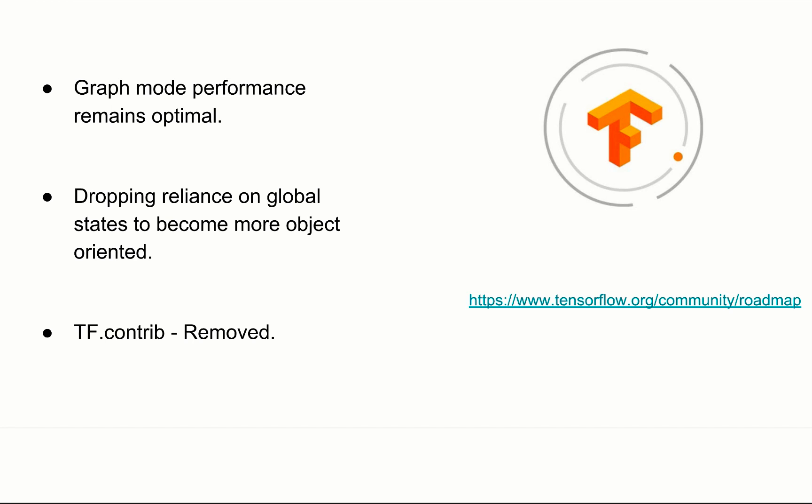With the updates as well, for graph mode, we are going to see eager execution become the default, but graph mode performance remains optimal for deep learning. We're going to also see the dropping of reliance on global states to become more object-oriented. Again, we're touching on contrib becoming removed, and we're also going to have variable scope slated to be removed.